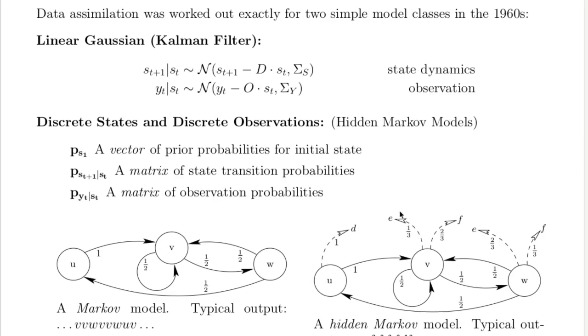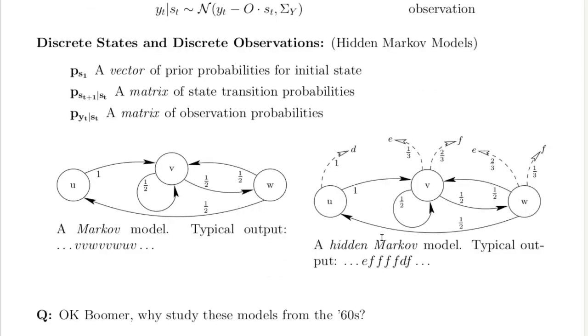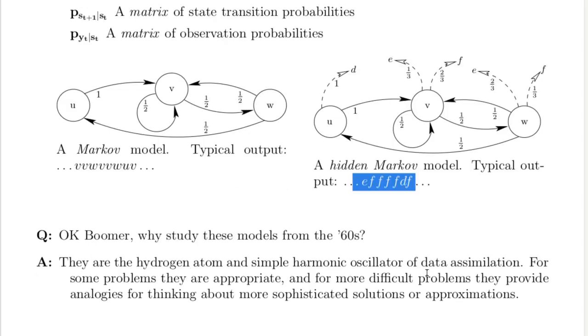These two graphs illustrate the difference between a Markov model and a hidden Markov model. For the Markov model, the observations uniquely define the states, so you can get a sequence like this. For the hidden Markov model, the observations are random functions that depend on the states. A sequence of observations may or may not correspond to a unique sequence of states, and so you can get a sequence of observations that look like this. While these models are old and simple, like the hydrogen atom and the harmonic oscillator in physics, they are powerful foundations for representing more difficult problems.